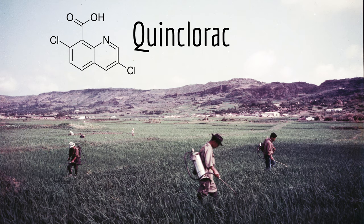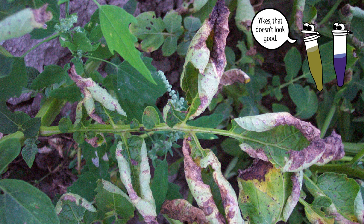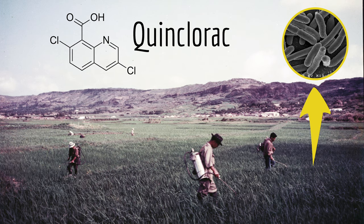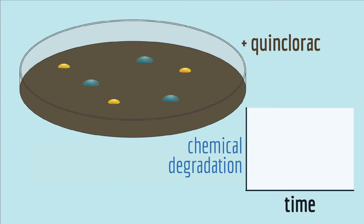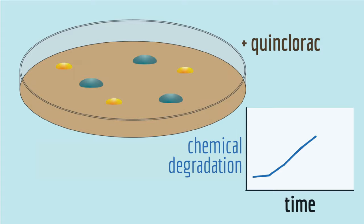Quinclorac is used to kill weeds in rice fields and lawns, but it's toxic to many types of crops and it's slow to break down in the environment. The scientists isolated a strain of bacteria from a field contaminated with high levels of Quinclorac, but they needed to show that as the bacteria grow, the bacteria actually degrade the toxic chemical.